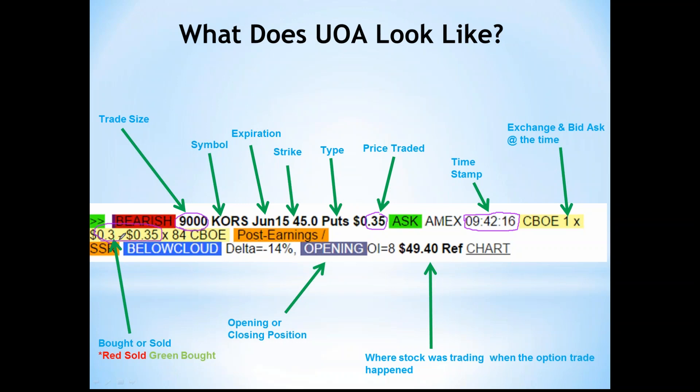They paid 35 cents for 9,000 puts when the market was 30 bid at 35. That tells me they came in and said 'we want these contracts' — they didn't bid 30, they just paid the ask at 35 cents. This is a more aggressive trade, which tells me this trader is serious and I want to pay attention. 9,000 contracts is a very large order. Not many traders are sitting at home as retail traders in their pajamas trading in that size.